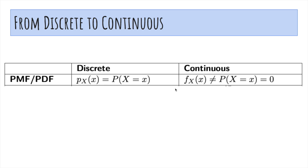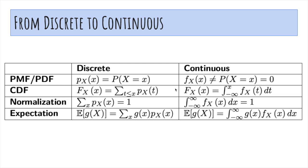How do we go from discrete to continuous? You can look at this chart yourself, but importantly, the sum of the PMFs equals 1 or the integral of the PDF equals 1. If you want the expected value of g of x — this is LOTUS — you sum over all x the value times the PMF. For continuous variables, you switch to an integral and multiply by the density dx.